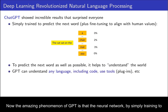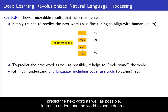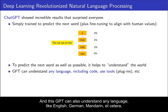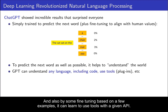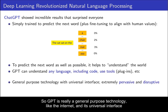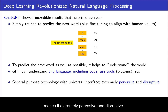The amazing phenomenon of GPT is that the neural network, by simply training to predict the next word as well as possible, learns to understand the world to some degree. GPT can understand any language like English, German, Mandarin, etc., but also languages like Python, CSV files, PowerPoint, and code. And by some fine-tuning based on a few examples it can learn to use tools with a given API. So GPT is really a general purpose technology like the internet, and its universal interface makes it extremely pervasive and disruptive.